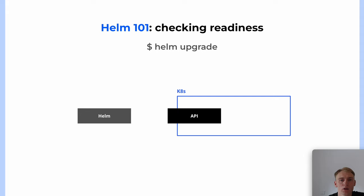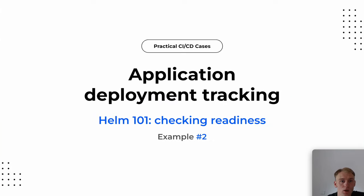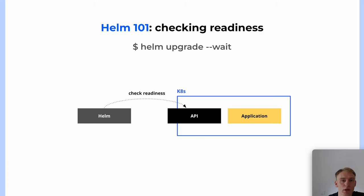We have Helm and we deploy our application to Kubernetes. Let's run the helm upgrade command. Helm applies the manifest to Kubernetes, and Kubernetes applies the manifests. After that, the Helm command completes successfully. But we need more — we want to know when the application is ready. Helm has a --wait option that allows us to wait until the application becomes ready. After the manifests are applied, Helm starts checking the readiness of the application, and when the application is ready, the command completes successfully.